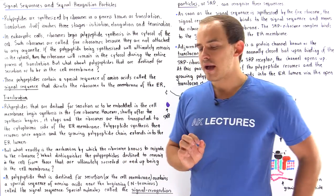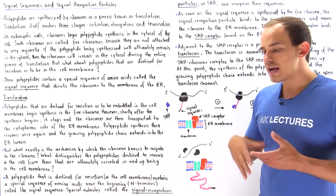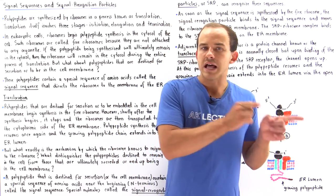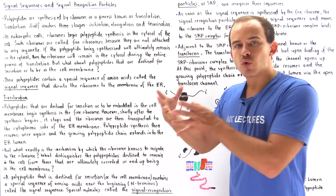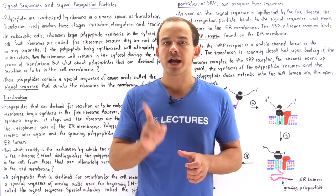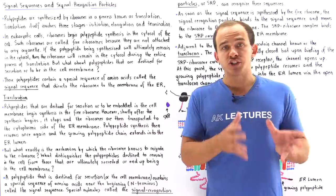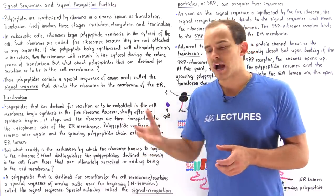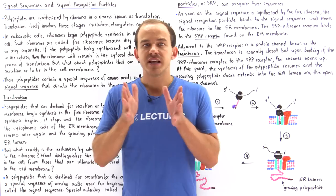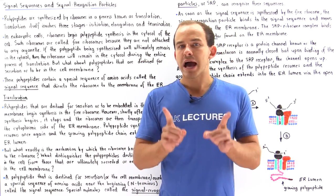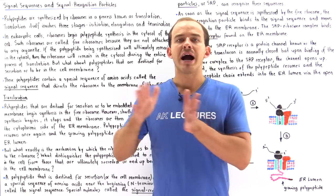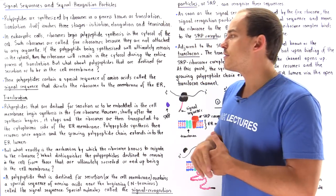However, if the growing polypeptide chain is destined to be either secreted by the cell or embedded into the plasma membrane, the free ribosome and the growing polypeptide chain will attach onto the membrane of the endoplasmic reticulum, and the free ribosome becomes a membrane-bound ribosome. So free ribosomes synthesize polypeptides destined to remain inside the cytoplasm, while membrane-bound ribosomes form proteins that are either secreted or remain inside the membrane.